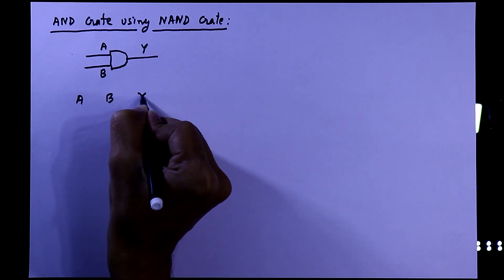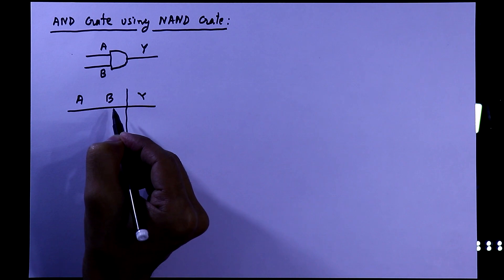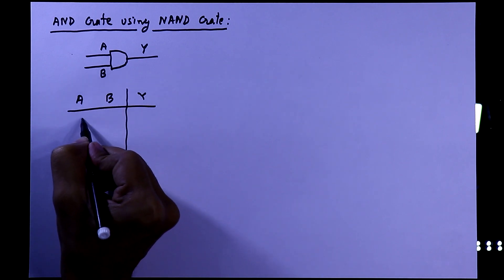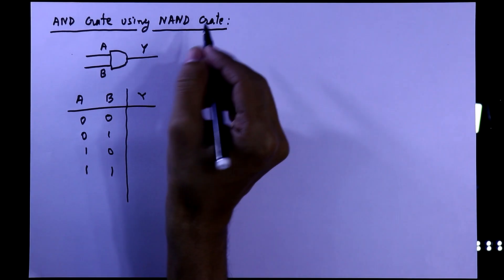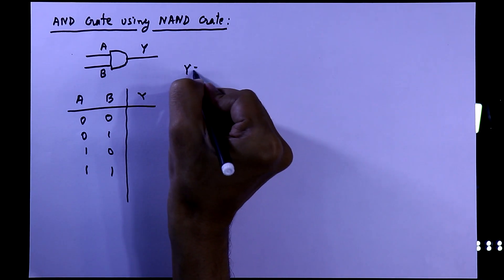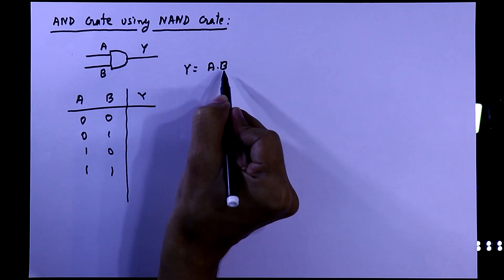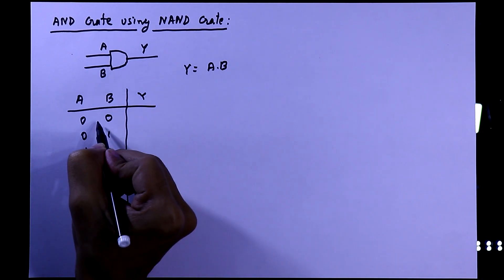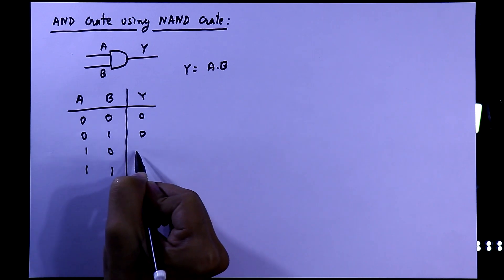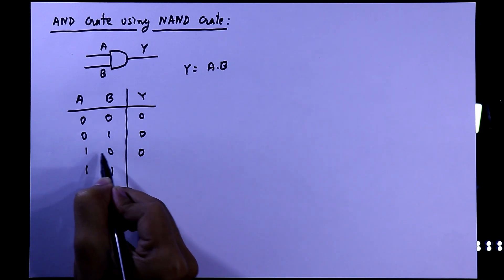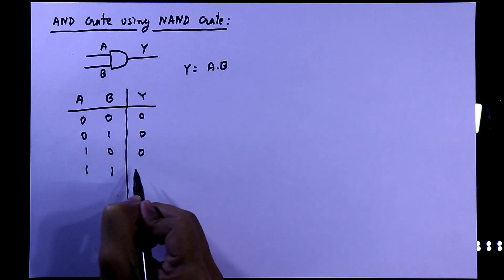Now we'll see the truth table of AND gate. As it has two inputs, so we have four possibilities: 0 0, 0 1, 1 0, and 1 1. Its mathematical expression is Y = A · B, so its truth table will be: 0·0 = 0, 1·0 = 0, and 1·1 = 1.